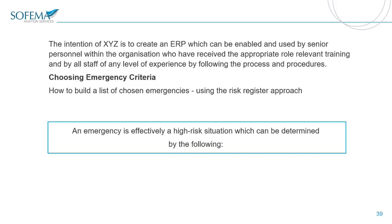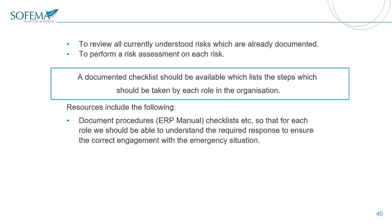The intention of our organization is to create an emergency response plan which can be enabled and used by senior personnel. To build a list of chosen emergencies, use the risk register approach — look at the biggest risks we've identified and connect them to types of emergency scenarios. What happens if there is a medical emergency? What happens if there is another type of emergency within the hangar environment? Review all currently understood risks, perform a risk assessment, and create a documented checklist listing the steps to be taken in each role of the organization.